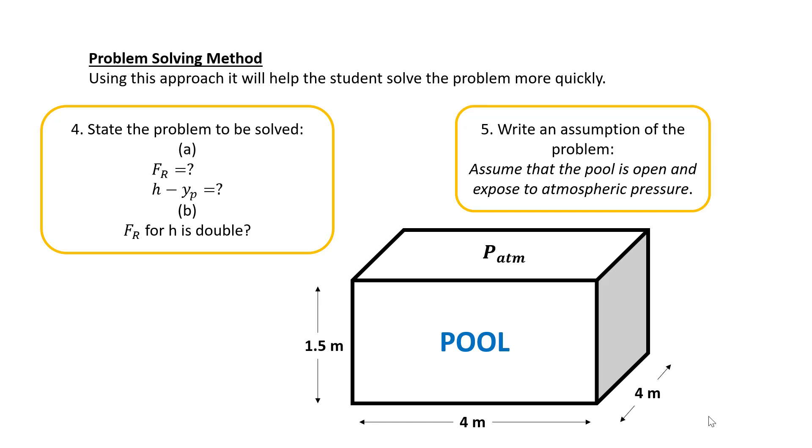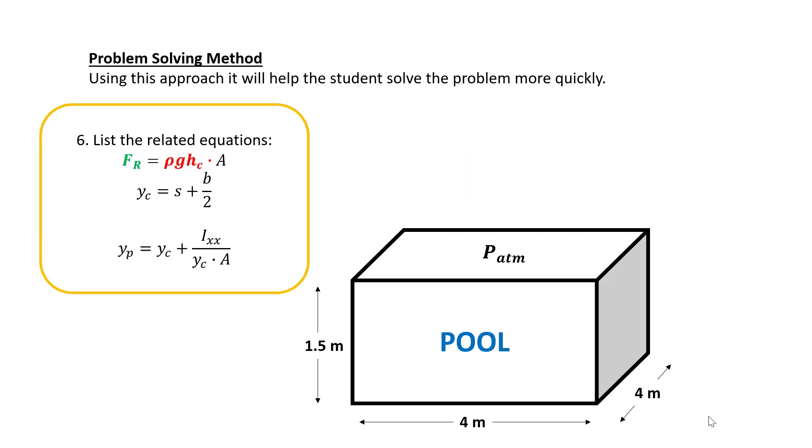Now let us state the problem to be solved. For part A, we need to find FR and the distance of FR from the bottom of the pool. For question B, we need to find the value of FR if H is doubled. For our assumption, we assume that the pool is open and exposed to atmospheric pressure Patm.